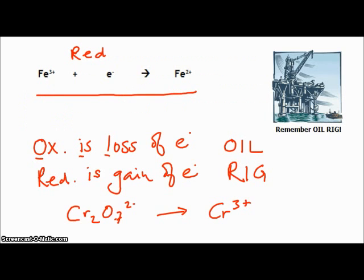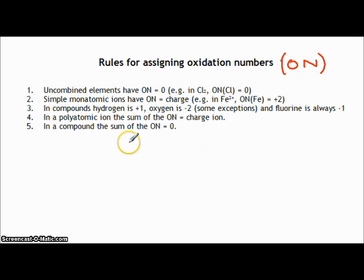This is something you would have done last year or the year before — rules for assigning oxidation numbers. There are five basic rules that will help us assign oxidation numbers correctly. I'm going to use the abbreviation ON for oxidation number, so look out for that. The first rule says that uncombined elements have an oxidation number of zero.